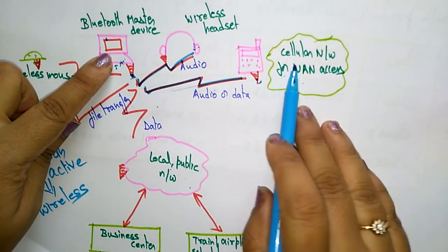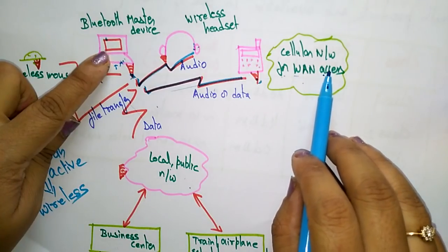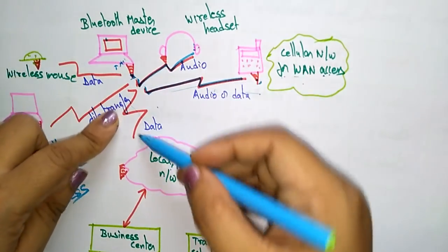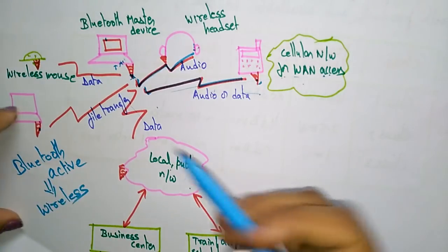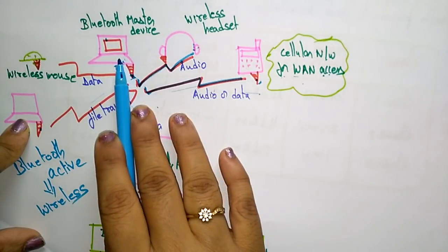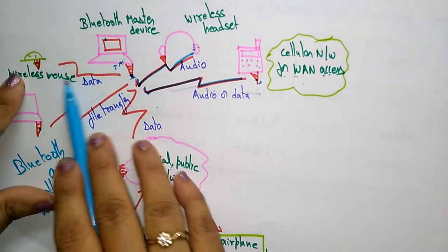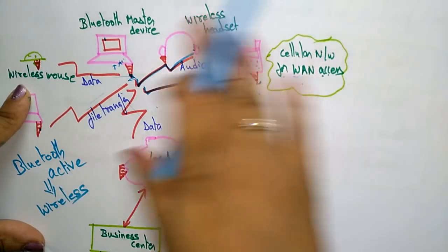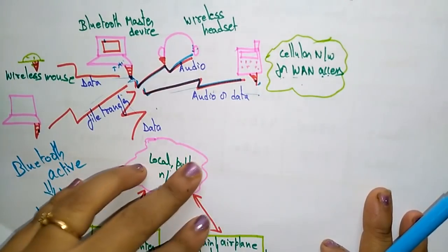The cellular network connects to the wireless wide area network. Data is also transferred to the local or public network, which is about 100 meters away. Files can be transferred from the Bluetooth master PC to another laptop, and with a wireless mouse, data is transferred — this is how the Personal Area Network is established among nearby devices.